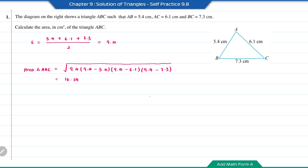We can also solve this question using the formula (1/2) AB sin C. We just need to find one angle inside triangle ABC. Let's say the angle we want to find is angle B, which is opposite to the length AC.